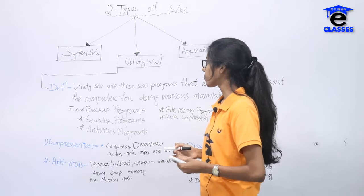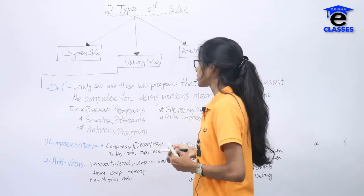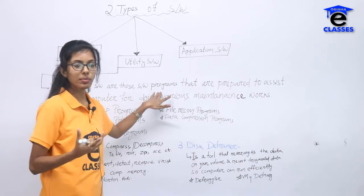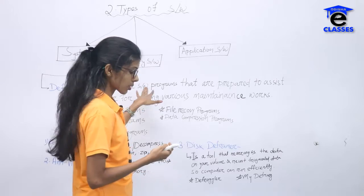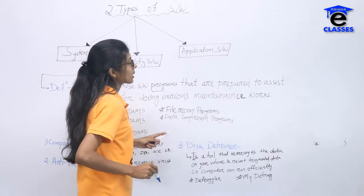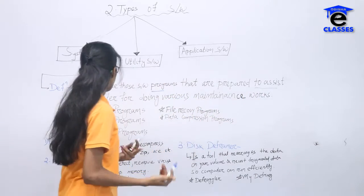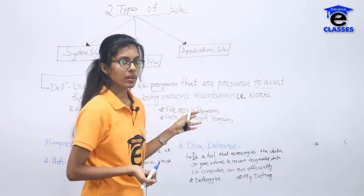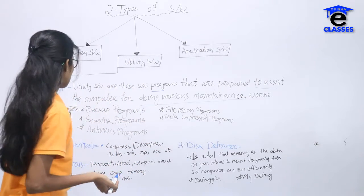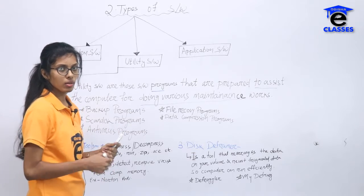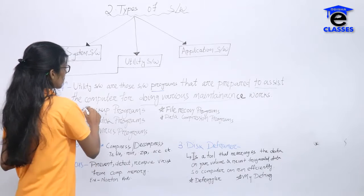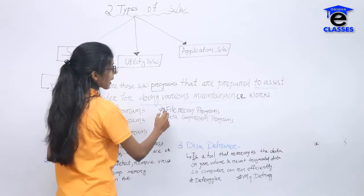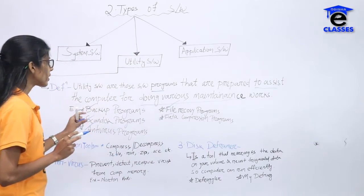The definition of utility software: utility software are those software programs that are prepared to assist the computer for doing various maintenance works. Utility software is the best way to assist the computer for doing various maintenance work. Examples include backup programs.